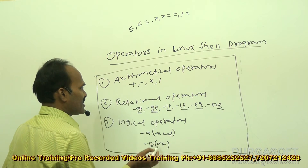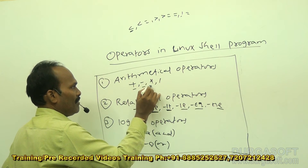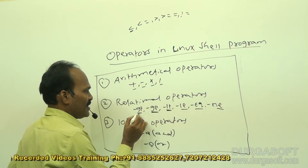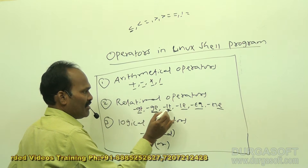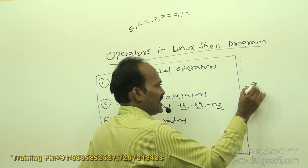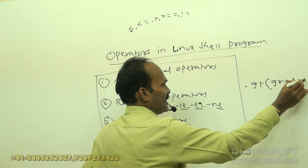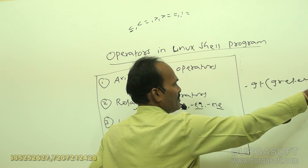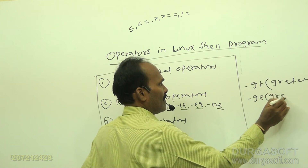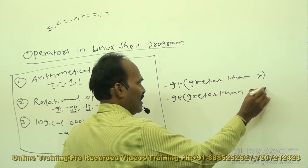So on mathematical operators we have addition, subtraction, multiplication, and division. For relational operators we use: -gt for greater than — in C/C++ we use the < symbol — and -ge for greater than or equal to.